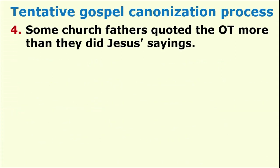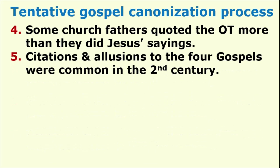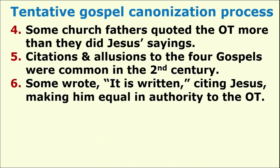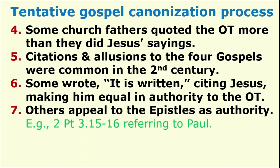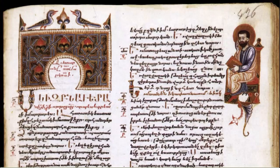Step four: some church fathers quoted the Old Testament more than they did Jesus' sayings. Citations and allusions to the four Gospels were common in the second century. Some fathers wrote 'it is written' while citing Jesus, making him equal in authority to the Tanakh, the Old Testament. Others appealed to the epistles as authority — for example, 2 Peter when referring to the writings of Paul. Somewhere around the year 160, Tatian published his Diatessaron, which blended the Gospels of Matthew, Mark, Luke, and John into a single account in Aramaic language for the Syrian churches, of which we here have a later copy.